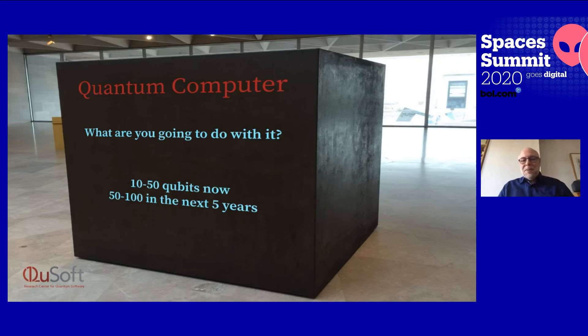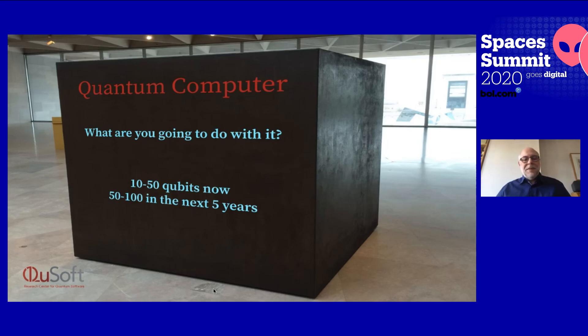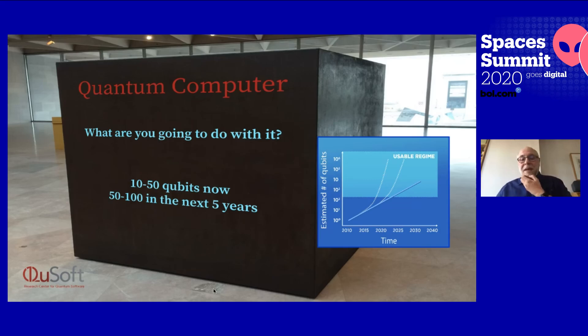This question of buying a quantum computer on the internet is not that far away as you might think, because already small systems like 10 or 50 qubits are available now. We foresee that in the next five years or so, we will get about 50 to 100 qubits available. And here you see a little graph — we actually expect something like a Moore's law for qubits and quantum computers. This is indeed happening, and we see already an exponential growth rate.